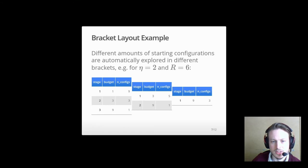Because it is not always the case that bad performance early on equals bad performance later on, hyperband creates several brackets ranging from an aggressive selection policy to no selection at all. Different amounts of configurations are automatically explored in different brackets.